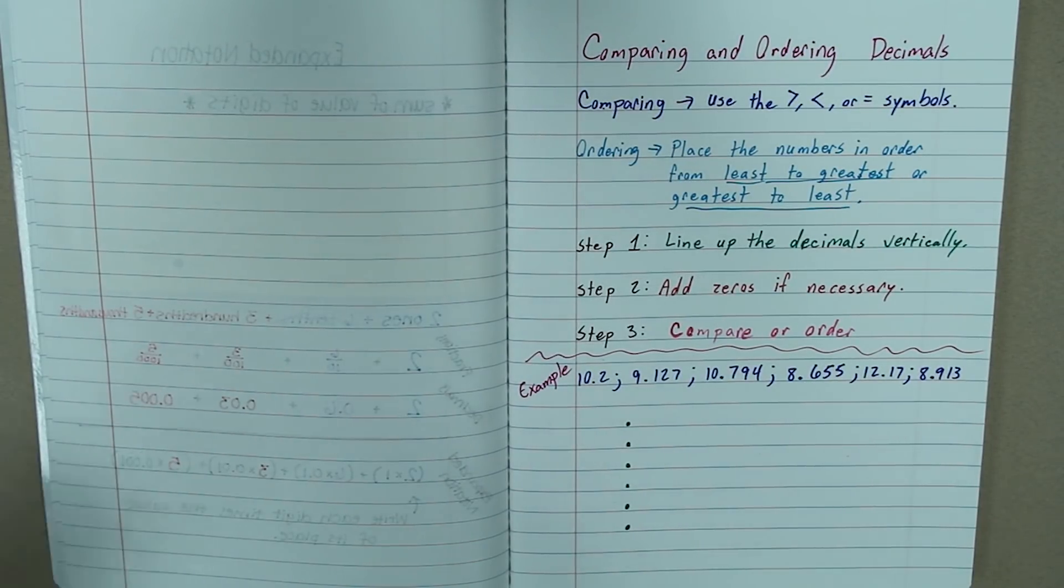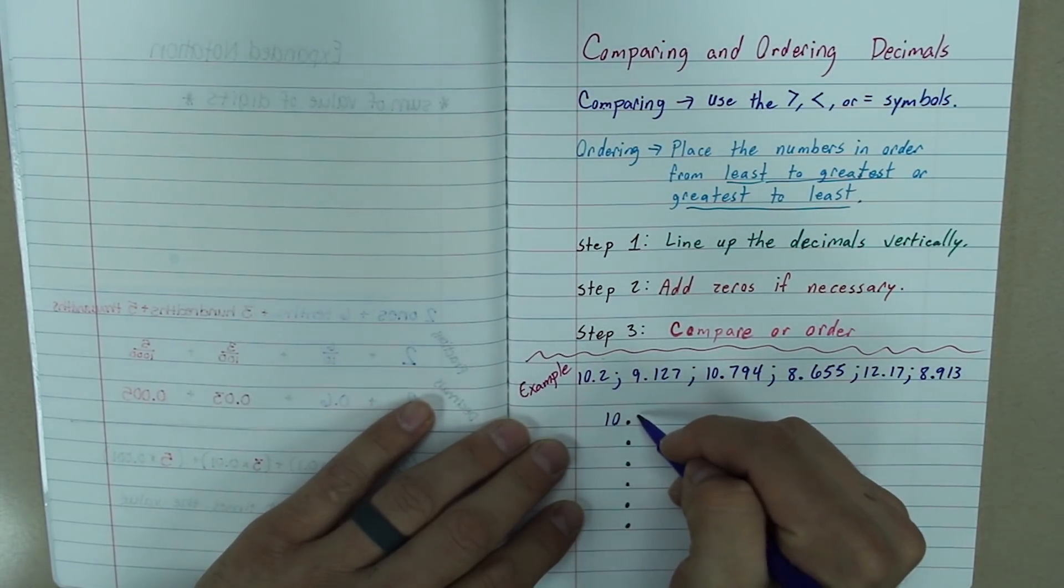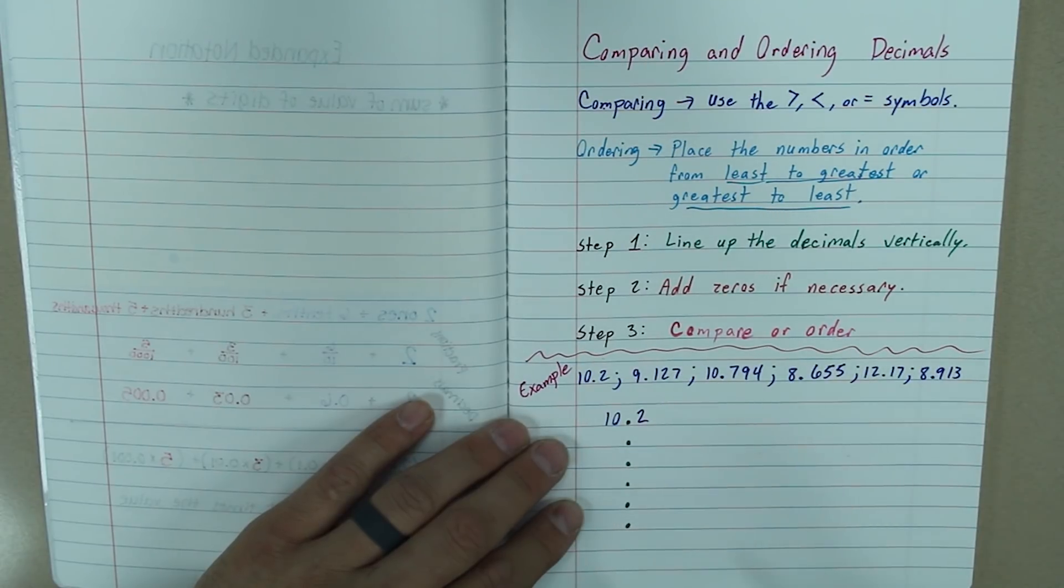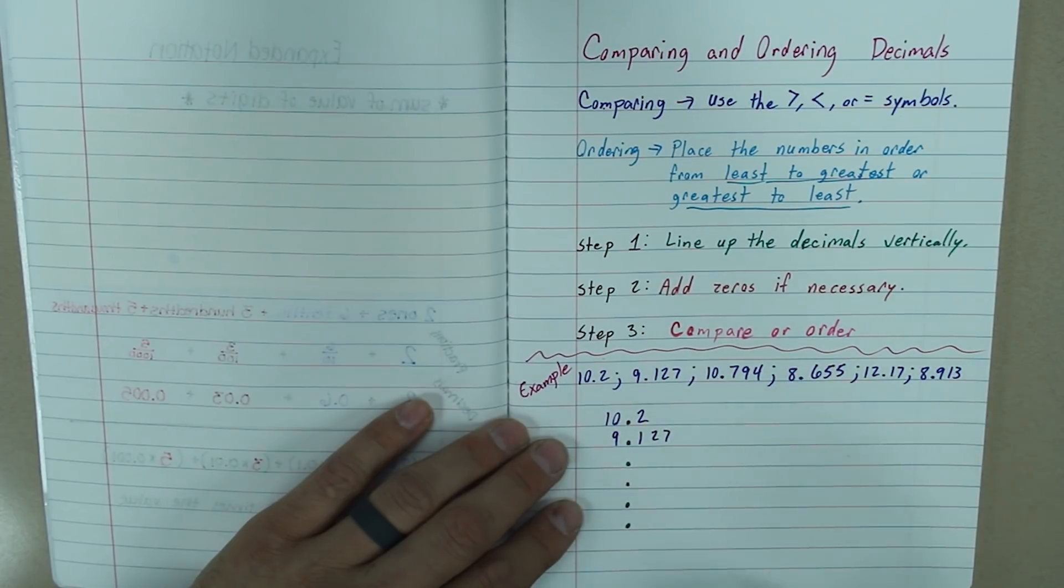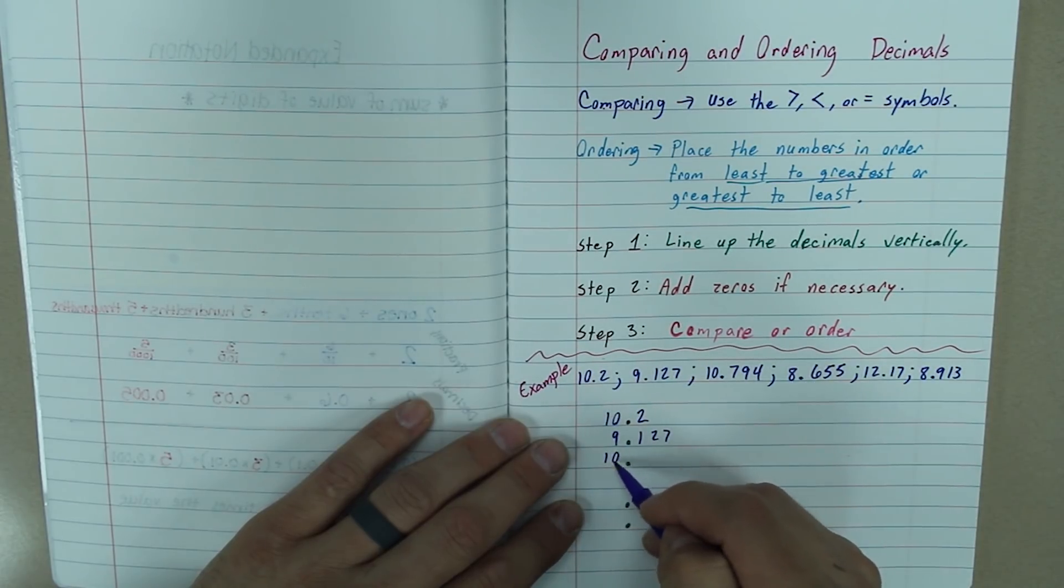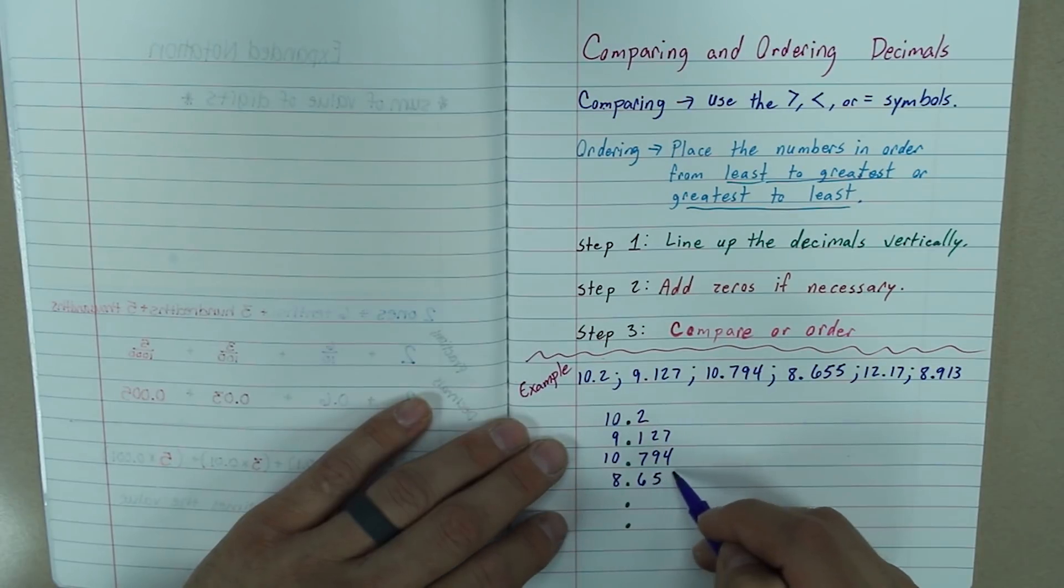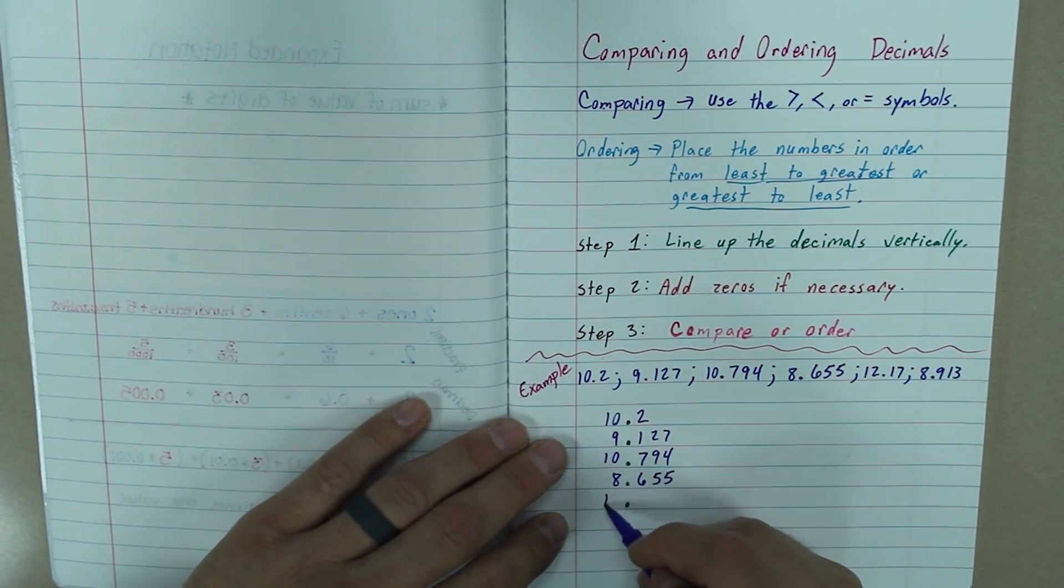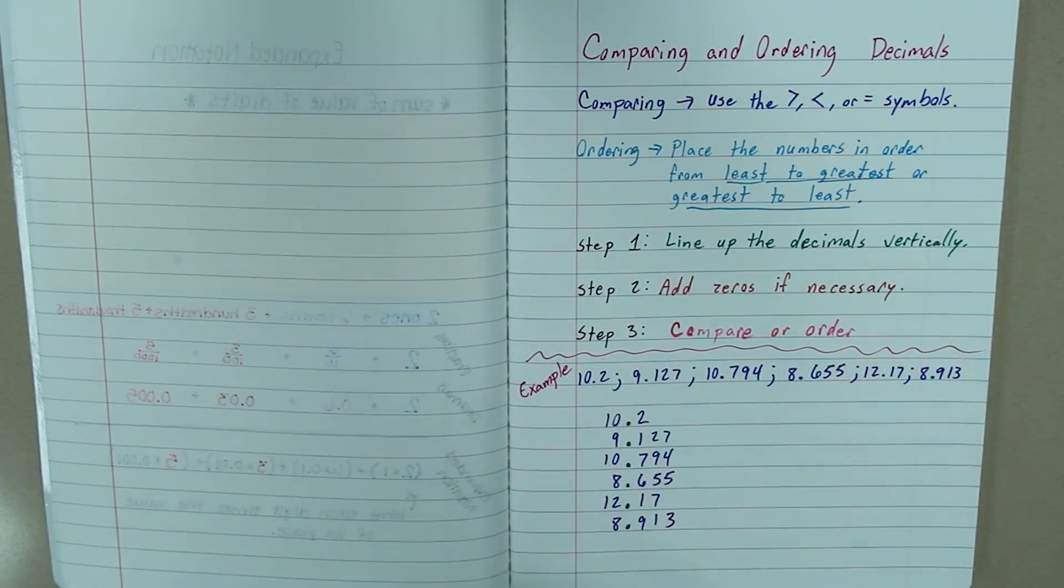I am going to write them the rest of the way. I have 10.2, 9.127, 10.794, 8.655, 12.17, and 8.913.